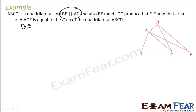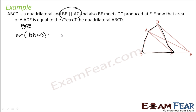Area of quadrilateral ABCD — let's first visualize this. Area of triangle ADE is what? It equals area of triangle ADC plus area of triangle ACE, because this complex quadrilateral can be split into those parts.